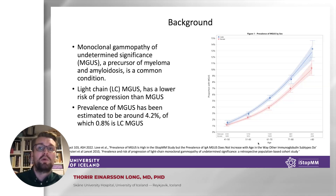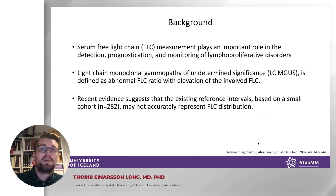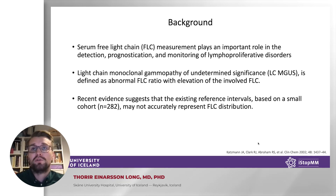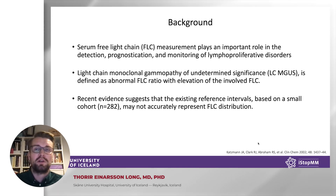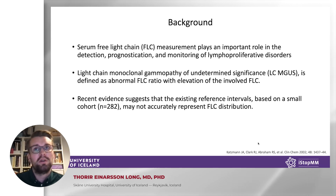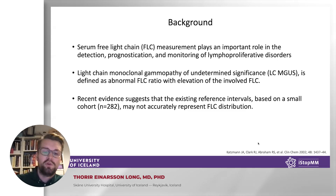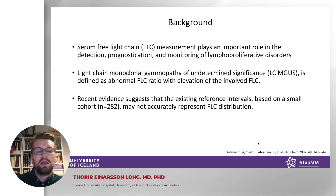However, light chain MGUS has been shown to be quite common, around 0.8% of the general population over the age of 50. The serum-free light chain measurement is central in detection, prognostication, and monitoring of lymphoproliferative disorders. Light chain MGUS is defined as an abnormal FLC ratio with elevation of involved FLC without underlying lymphoproliferative disorders. Ensuring the accuracy of the reference intervals is crucial, but there is increasing evidence that existing reference intervals, based on a small cohort of only 282 individuals, may not accurately represent the true distribution of FLC in the general population.